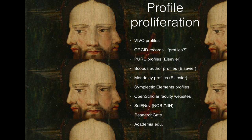There's also this notion of research profiles — they're everywhere, a proliferation of profiles. We started with VIVO profiles. There are ORCID records, Pure and Elsevier Pure profiles, Scopus profiles, Mendeley profiles, Symplectic Elements profiles, Open Scholar websites, ResearchGate profiles, NIH profiles. As a scholar, where do you begin? The question is how do we observe this space that is getting a bit unwieldy, yet we're talking about interoperability and linked data and a great knowledge network where everything flows and is interconnected.